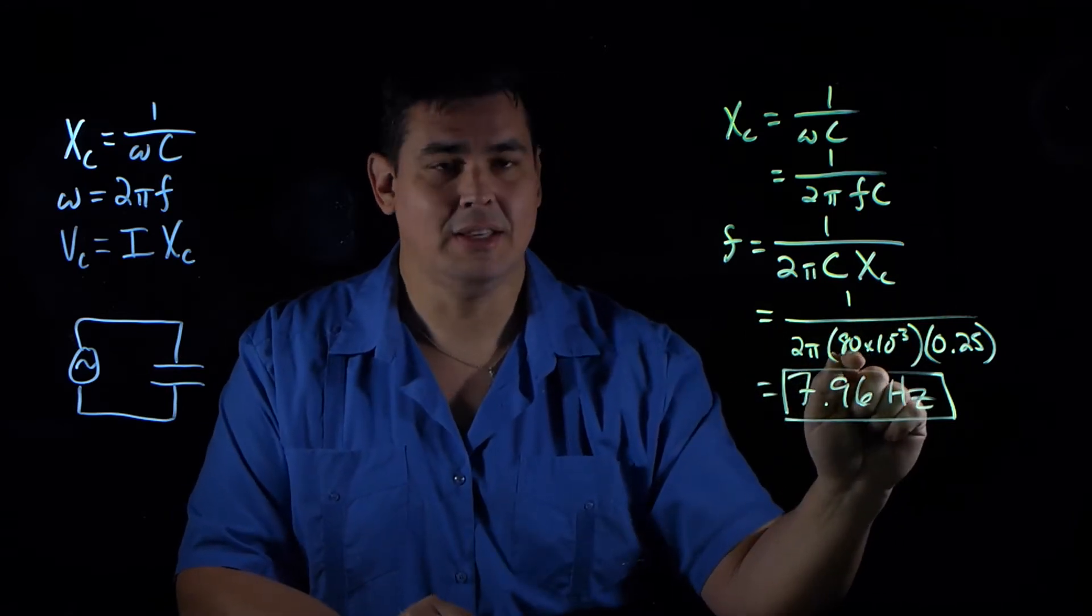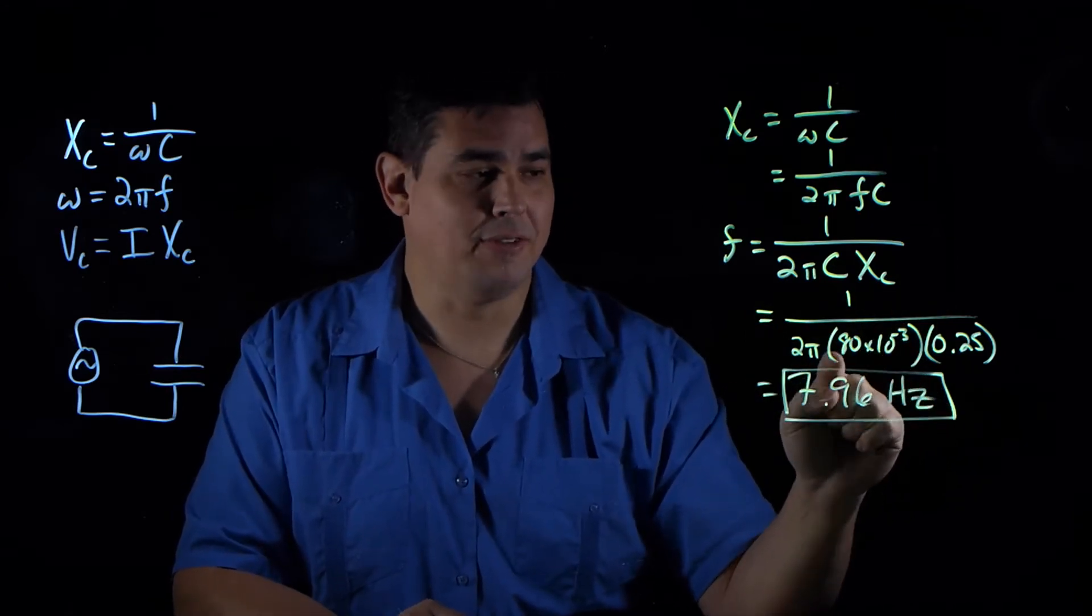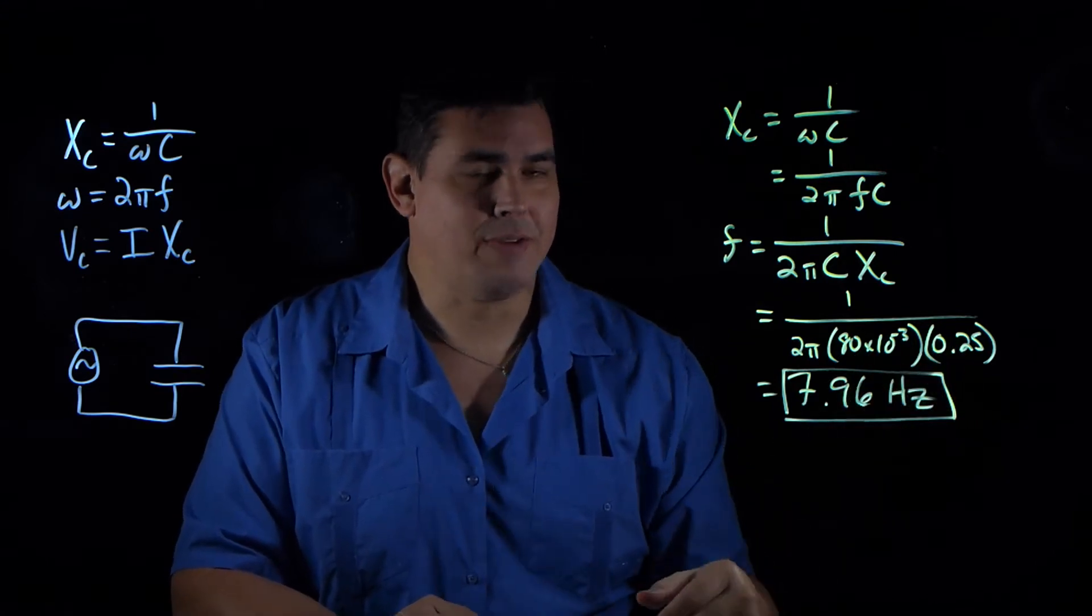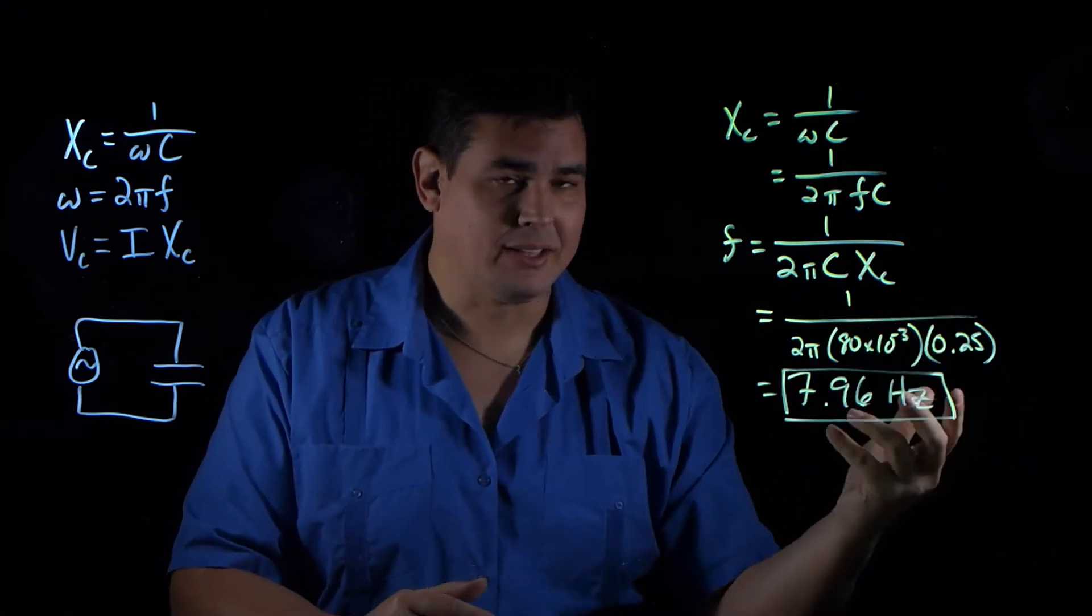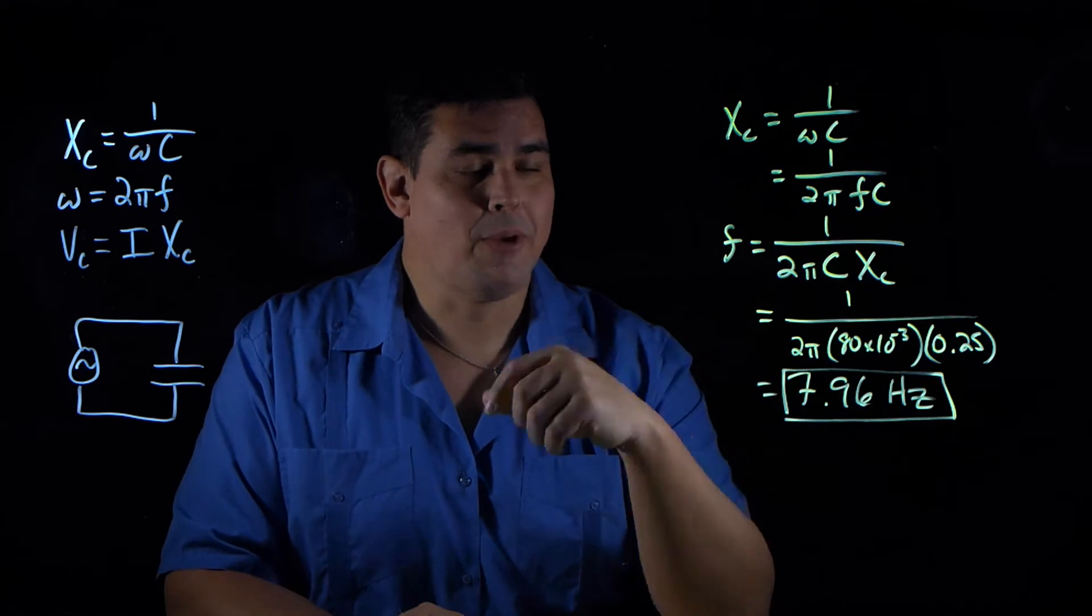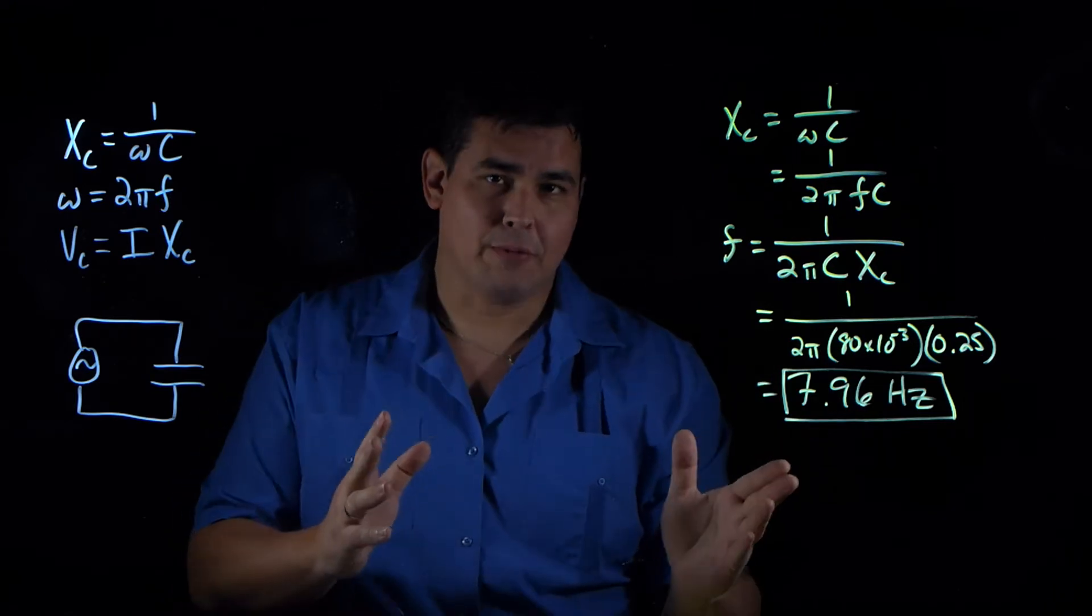And then I just plug in. So my capacitance was 80 times 10 to the minus third, because millifarad is minus third. And then 0.25 was my reactance, which is like the resistance. And so that gives me 7.96 Hertz. Pretty straightforward problem.